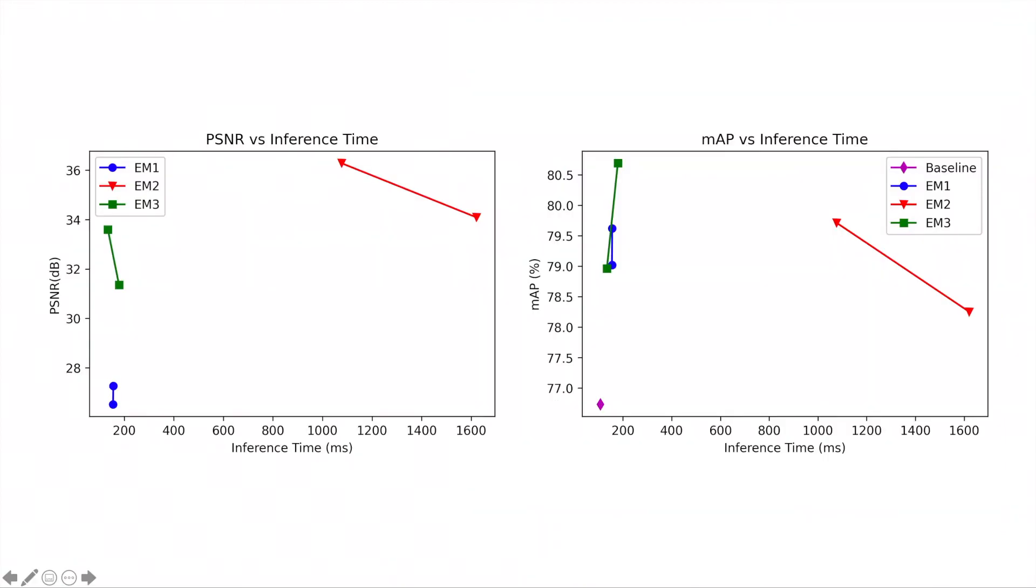Here, all the models are compared against each other and the plot on the left shows the PSNR versus inference time. The plot on the right shows the mean average precision versus inference time.